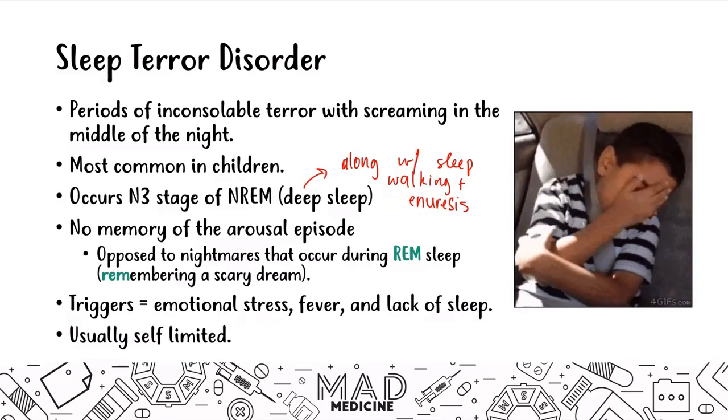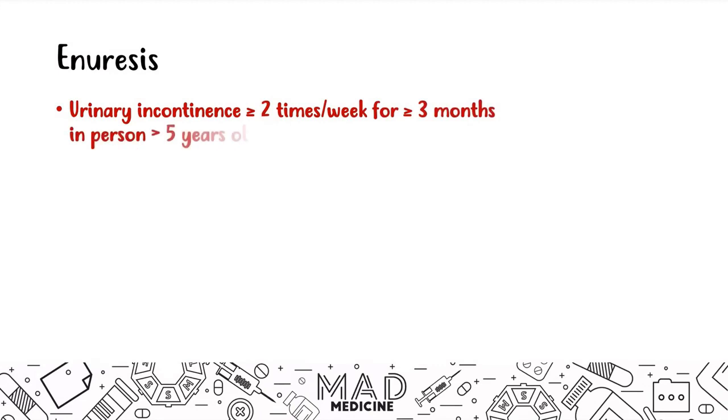Finally we have enuresis. Enuresis is when a patient, usually a child, has urinary incontinence that occurs more than two times a week for three months. It usually occurs in a person greater than five years old. If it's someone greater than five years old having urinary incontinence while sleeping, we classify that as enuresis.